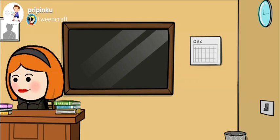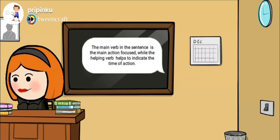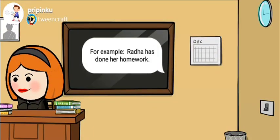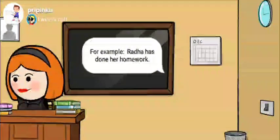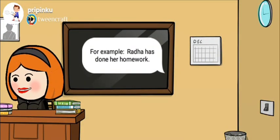Now let's discuss about main verb and helping verb. The main verb in the sentence is the main action focused, while the helping verb helps to indicate the time of action. For example: 'Radha has done her homework.' In this sentence, has is our helping verb, whereas done is the main verb. Has is indicating the time of action, whereas done is indicating the action performed by Radha, the primary subject. So done will be the main verb and has will be the helping verb in the sentence.